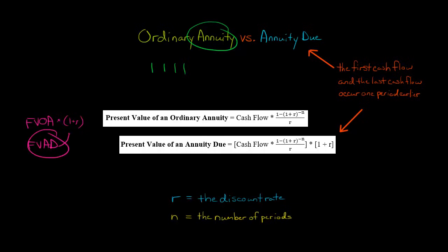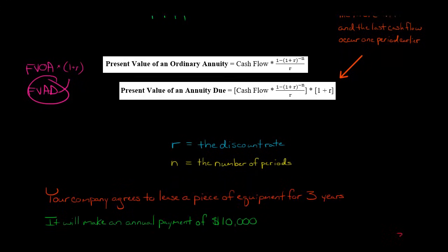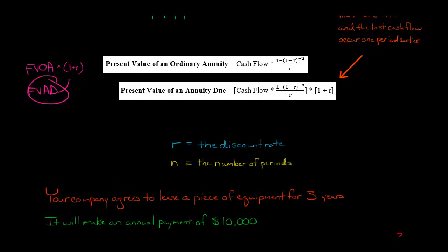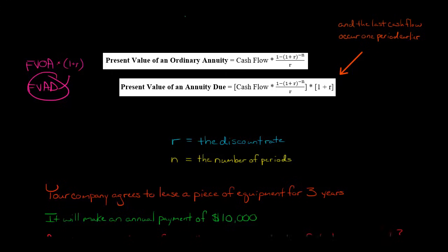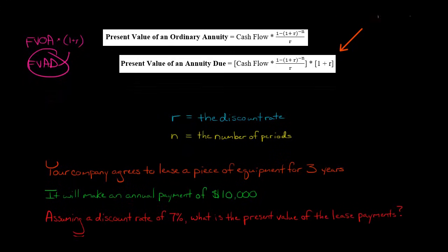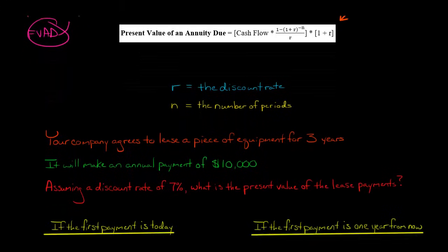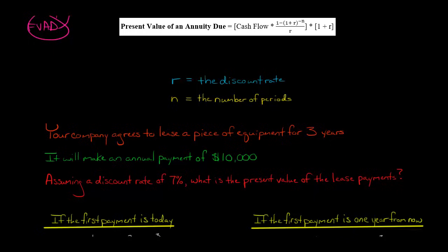Let's look at an example using present value. Say we have a company that agrees to lease a piece of equipment for three years and it's going to make an annual payment of $10,000. Whether that first payment occurs today or one year from now is going to determine whether we have an ordinary annuity or an annuity due.